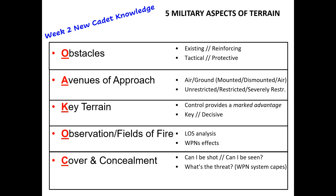The five aspects of military terrain are something you should already know, but here is a refresher. We're talking about obstacles, avenues of approach, key terrain, observation and fields of fire, and cover and concealment. We're going to walk through each of those and talk about how we think about them.